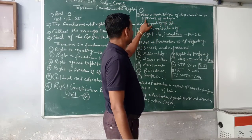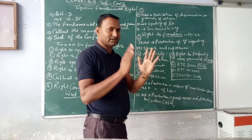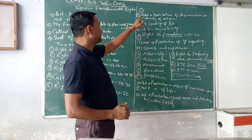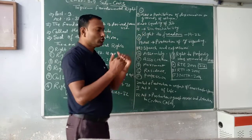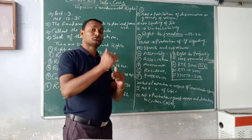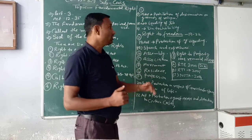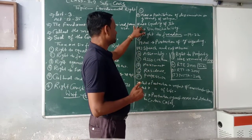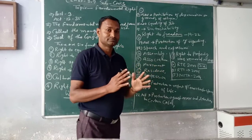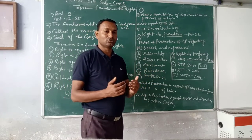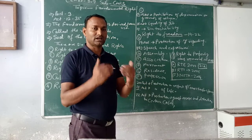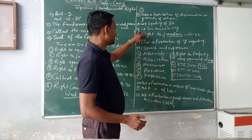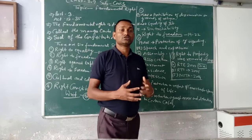Article 15 covers the prohibition of discrimination on grounds of religion, race, caste, sex, or place of birth. No discrimination can be made against anyone in our country. Article 15 also covers social and economic growth — those who have not progressed get deployment and reservation in jobs. This includes SC, ST, OBC classes. Equality of job opportunity means anyone can get a job. Article 17 covers untouchability, which is abolished and its practice is a punishable offence.